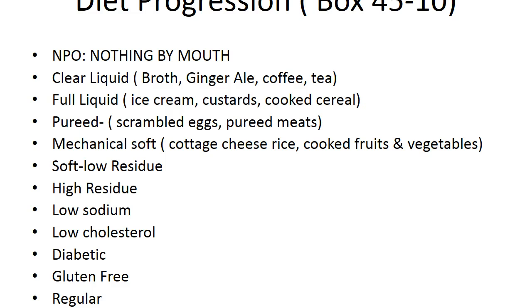The high-residue or high-fiber diet includes fresh uncooked fruits, steamed vegetables, bran, oatmeal, and dried fruits. The low-sodium diet means no added salt; the severe sodium restriction is less than 500 milligrams and requires teaching patients to read food labels. This diet is often required for hypertensive patients or those with kidney disease. The low-cholesterol diet is 300 milligrams or less per day; examples include oatmeal, fish with omega-3 fatty acids, walnuts, olives, and olive oil.